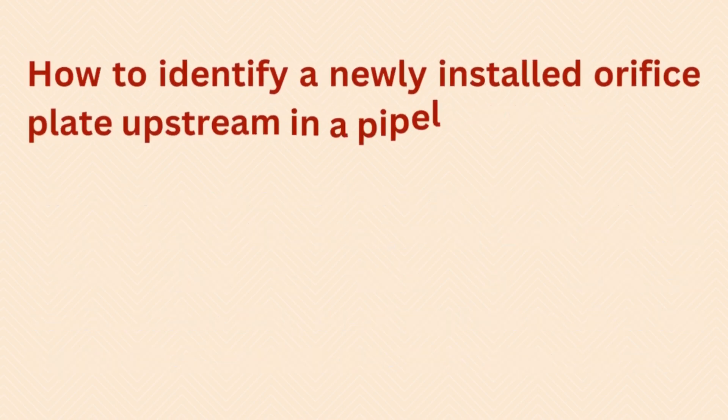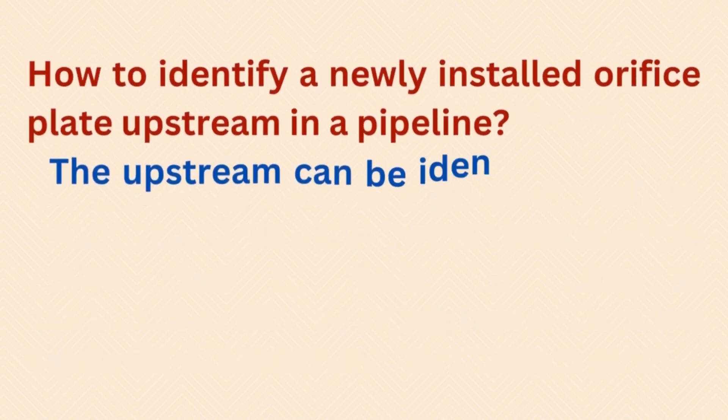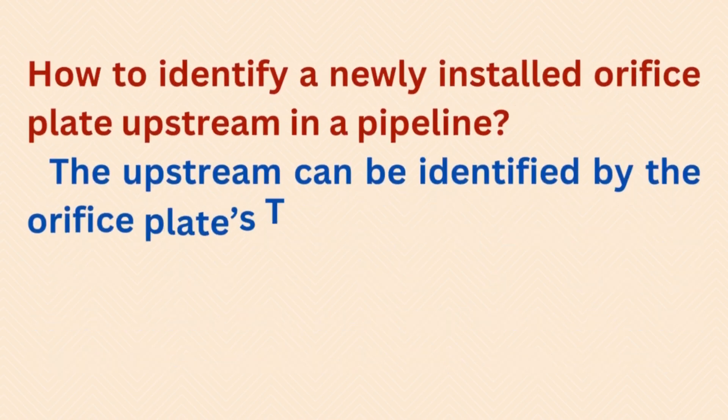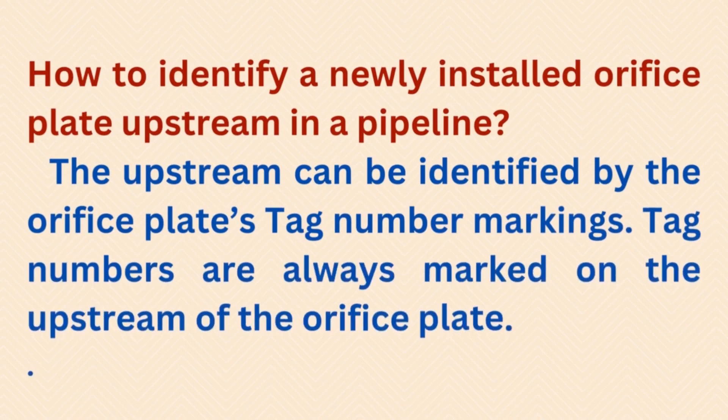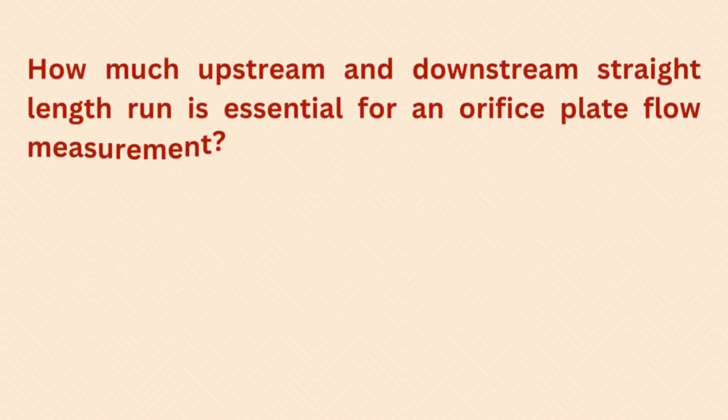How do you identify a newly installed orifice plate upstream in a pipeline? The upstream can be identified by the orifice plate's tag number markings, as tag numbers are always marked on the upstream side of the orifice plate.